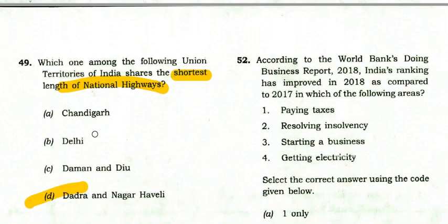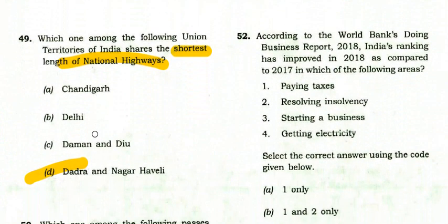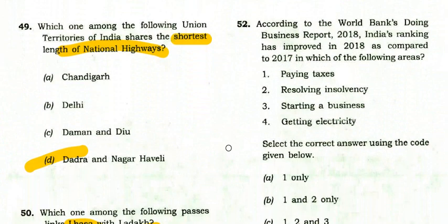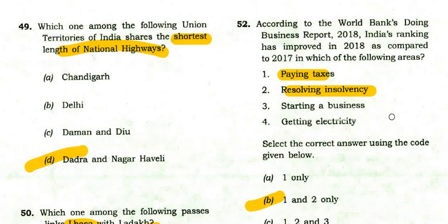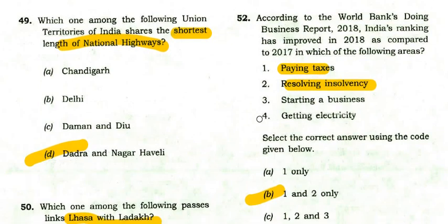According to the World Bank's Doing Business Report 2018, India's ranking improved in which areas compared to 2017? The right option is: 1 and 2 only — paying taxes and resolving insolvency improved, but starting a business deteriorated and getting electricity did not improve significantly.